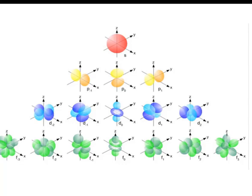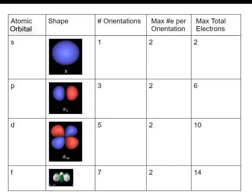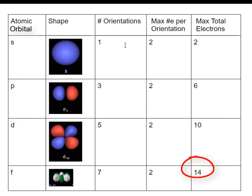Quantum theory predicts that a maximum of two electrons occupy each orientation. These atomic orbitals are shapes of space around the nucleus where electrons are most likely found. The fourth column indicates the maximum number of electrons per orientation. The last column is the total maximum electrons for all orientations of a particular atomic orbital type. If you multiply the number of orientations by the maximum electrons per orientation, you get the maximum number of electrons per atomic orbital type.